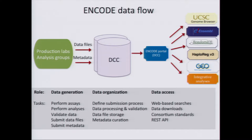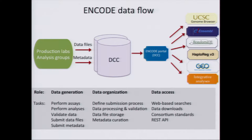The Data Coordination Center takes the information with the primary goal of data processing. We process a large percentage of the data files in a uniform way. We review the metadata with the labs. We also then develop the data portal. The ENCODE data portal is really the primary and central source for the ENCODE data.